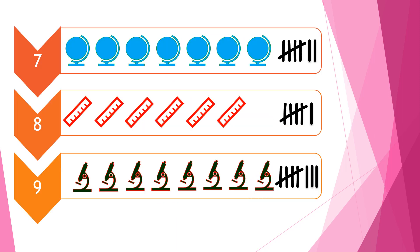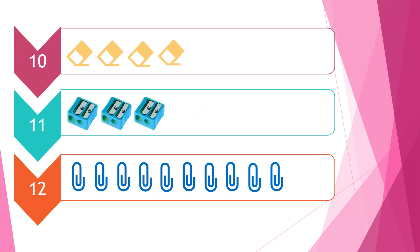You should have 7 gloves, 6 rulers, and 8 microscopes. Moving on to another three questions.